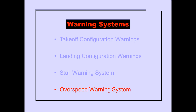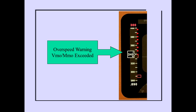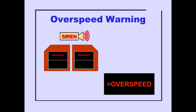The last system to be covered is the overspeed warning system. Whenever VMO/MMO is exceeded, an overspeed warning occurs. The overspeed warning consists of activation of the warning siren, illumination of the master warning lights, and the ICAS warning message Overspeed. The warning remains active until the airspeed is reduced below the operating limit.